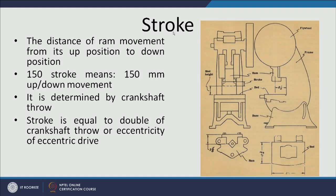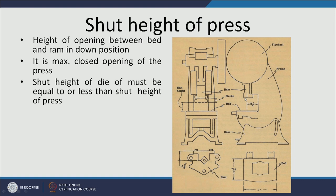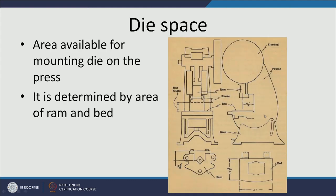Tonnage for hydraulic presses can vary from 50 to 5000 tons, while mechanical presses are of lower tonnage like 5–10 tons. Stroke is about the distance traveled by the ram from top to bottom position, e.g., 150mm movement, and is determined by the crankshaft. Shut height is the distance between the ram at its lowermost position and the bed; the die's shut height must be equal to or less than the press's shut height. Die space determines the maximum area available for mounting the die on the press.